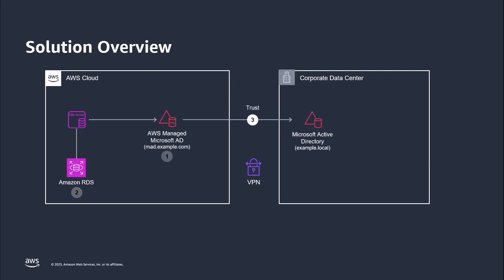Then we'll create a one-way forest trust between our Managed Microsoft Active Directory within AWS and our on-premises Active Directory environment, example.local. And finally, in order to demonstrate how we can authenticate an on-premises user to our RDS database instance using Windows authentication, we'll connect to our database instance using SQL Server Management Studio.